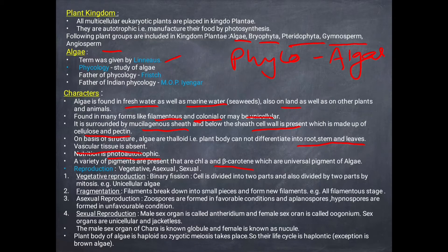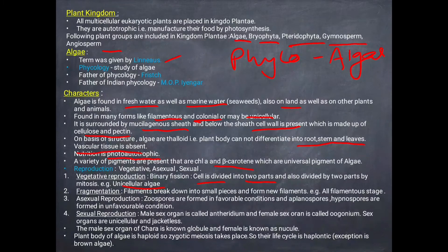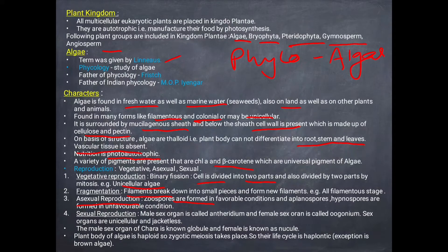Reproduction in algae occurs in three types: vegetative, asexual, and sexual. Vegetative reproduction occurs by binary fission, where the cell divides into two parts to form new organisms — this is seen in unicellular algae. Fragmentation is also a vegetative method where filaments break into small pieces and each piece forms new algae, seen in filamentous algae.